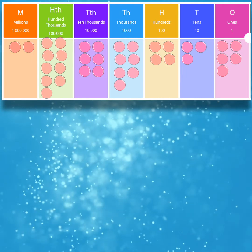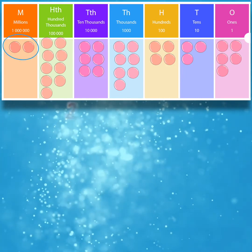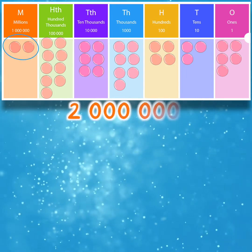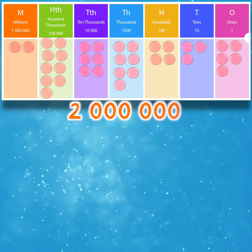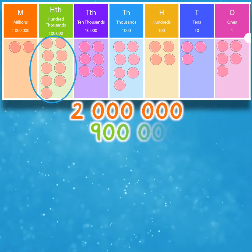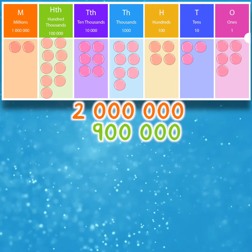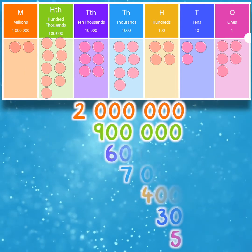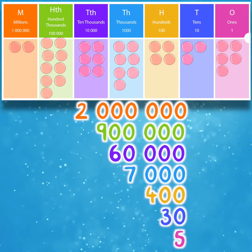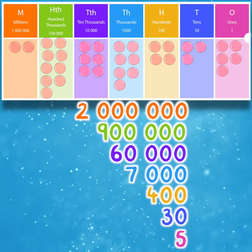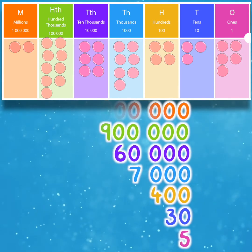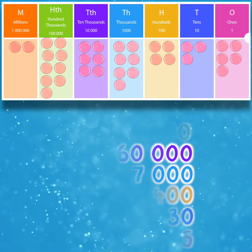Now let's partition this number. 2 counters in the millions column means we have 2 millions, which is 2,000,000. 9 counters in the 100,000s column means we have 900,000, and so on. So we have 2,000,000; 900,000; 60,000; 7,000; 400; 30; and 5.